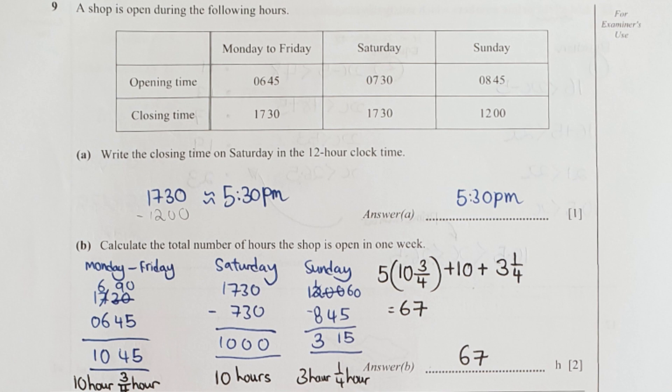Calculate the total number of hours open in a week. Monday to Friday the working hours is 10 hours and 45 minutes, for Saturday and Sunday it is 10 hours and 3 hours and 15 minutes. Multiply the first day by 5. You'll notice I written it as 3/4 because I converted the 45 minutes into hours. The total hours here will be 67.